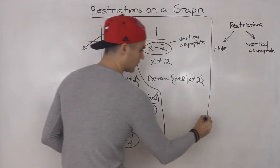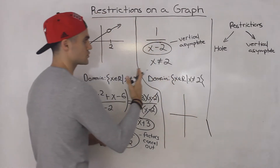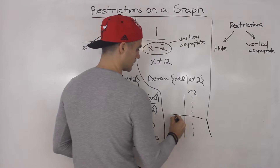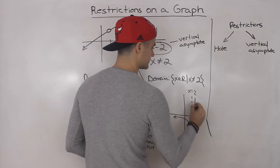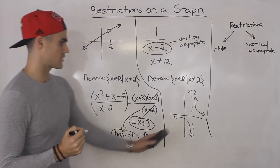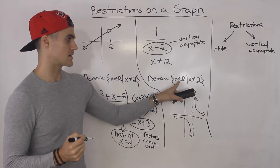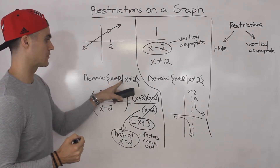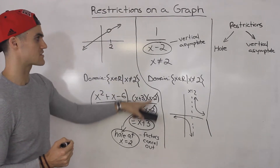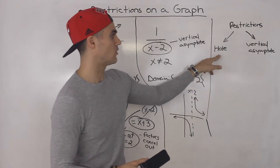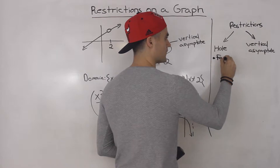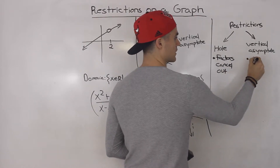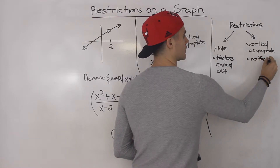And this graph here — notice how it's just the reciprocal function shifted 2 to the right. So we know there's a vertical asymptote at x is equal to 2, and that's how it's going to look. So the domain: x cannot equal 2 because of a vertical asymptote. Versus the first expression, x cannot equal 2 because of a hole — because that was a factor that cancelled out. So restrictions can either be a hole (if factors cancel out) or a vertical asymptote if no factors cancel out.